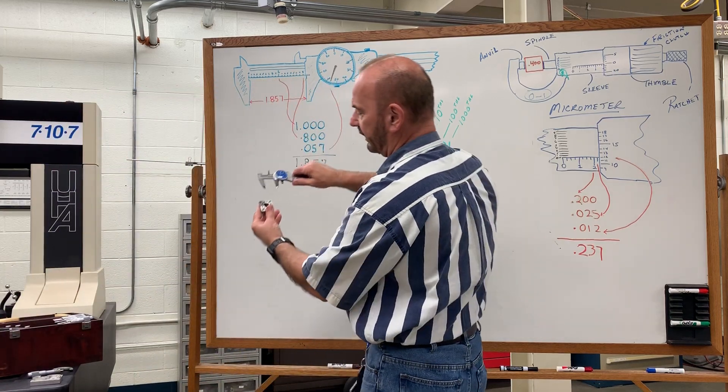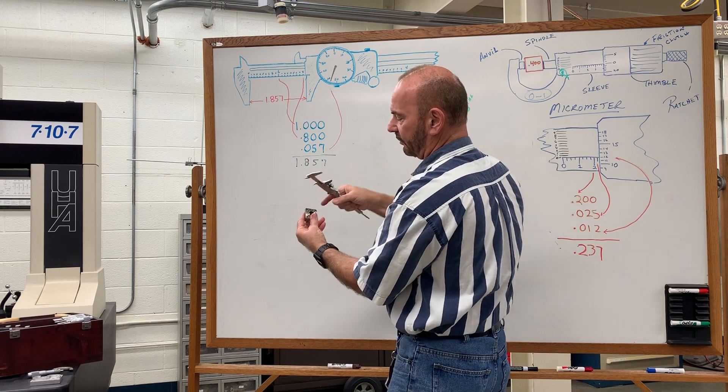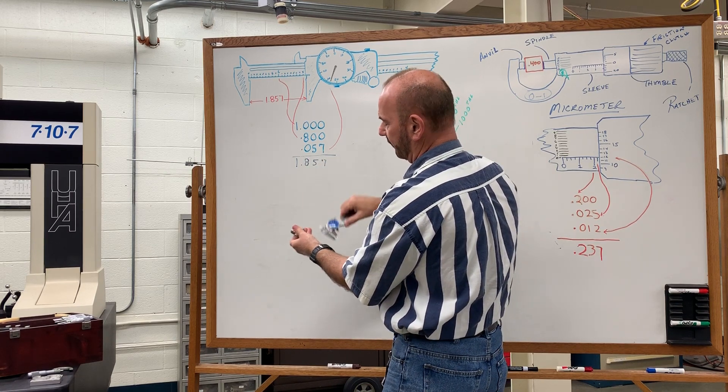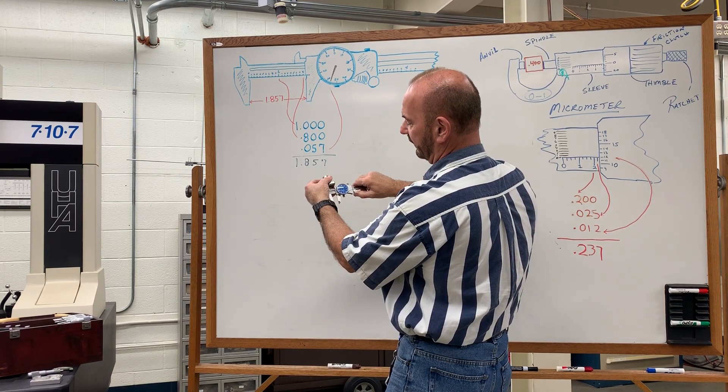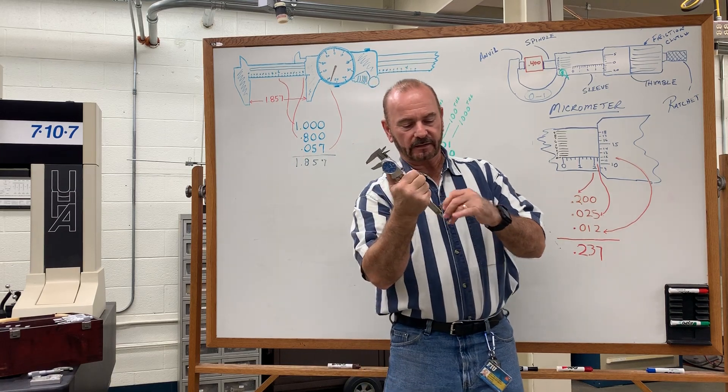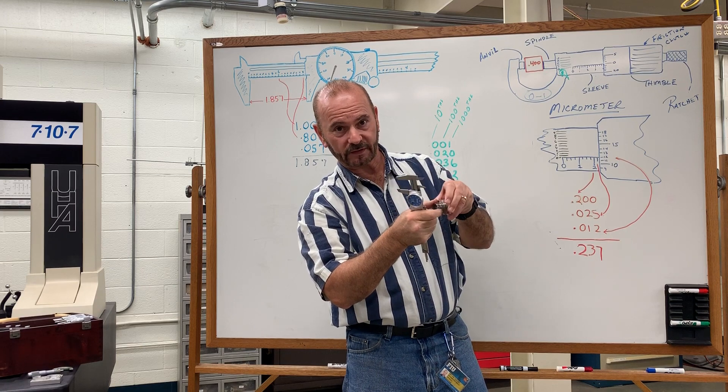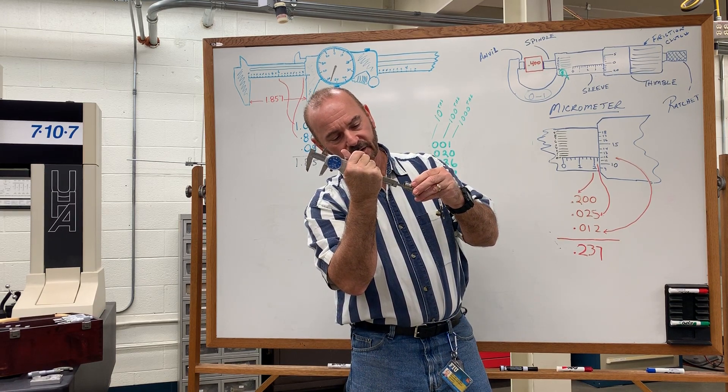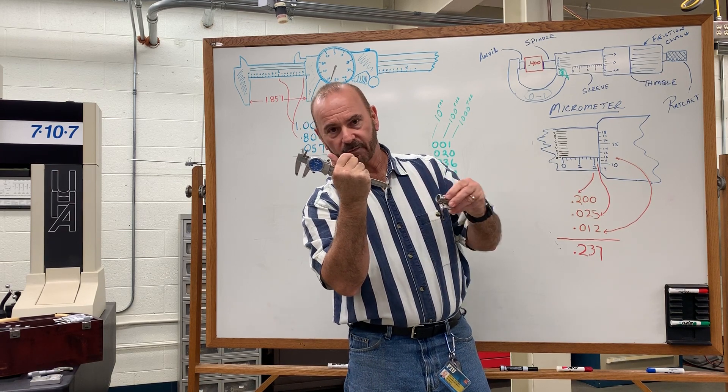With this caliper, I can measure the OD with this part of the caliper here. I can measure the ID, the inside dimension of this hole, using the little ears on top here and by pulling gently outward. With the caliper on this end here, this extension is for measuring depth. I actually have a small shoulder inside this part and I'm going to place that depth gauge inside and then just gently bring the caliper down to the face and I've measured the depth.